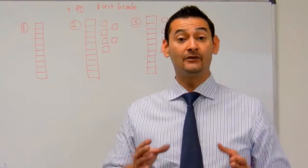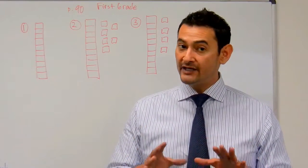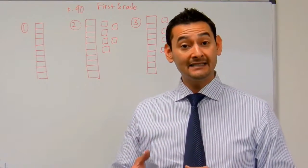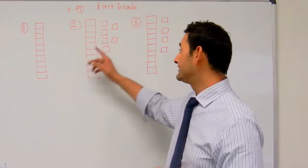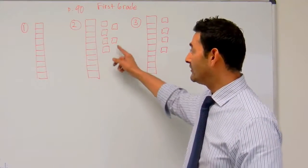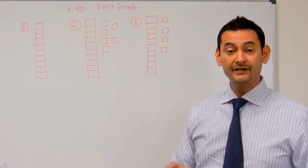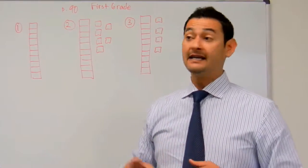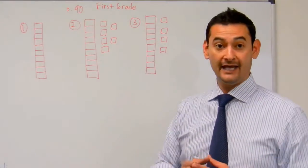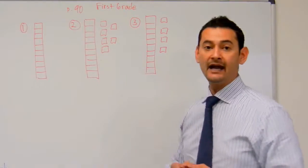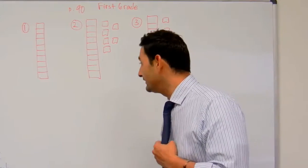actually, last time what we did is we counted the number of ones. Now we're still going to count the number of ones, but this time we have bundles of 10, and sometimes we have bundles of 10 and we also have ones as well. But we're going to figure out how many ones we have in these different scenarios, okay? So we're working on page 90 of your first grade hybrid math notebook, and let's take a look.